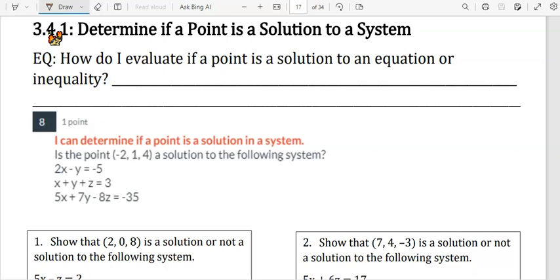2x minus y equals negative 5, x plus y plus z equals 3, and 5x plus 7y minus 8z equals negative 35.